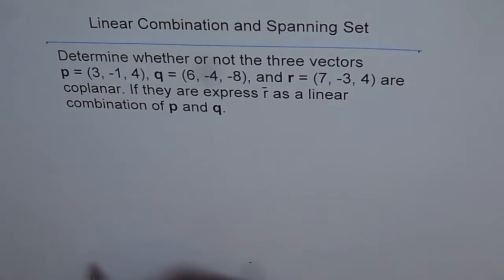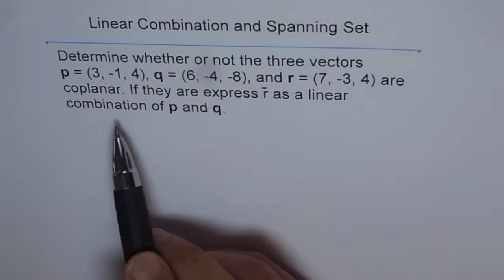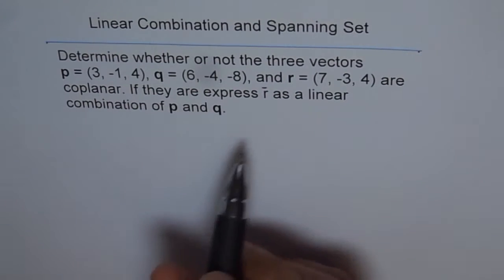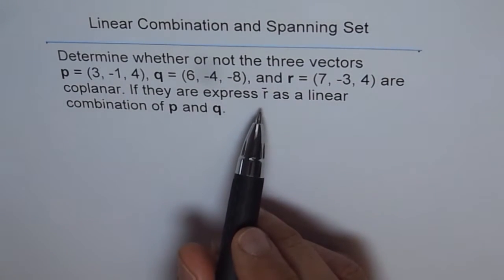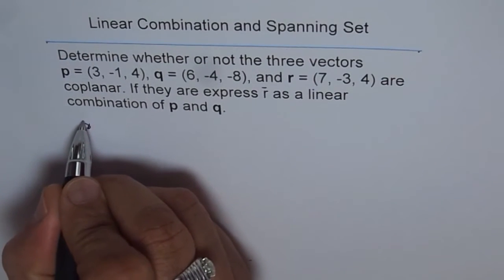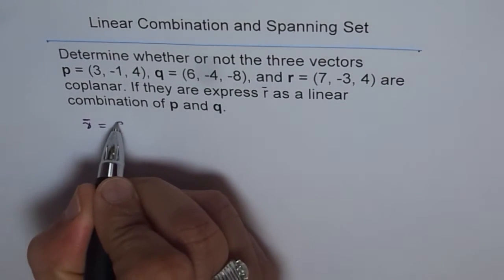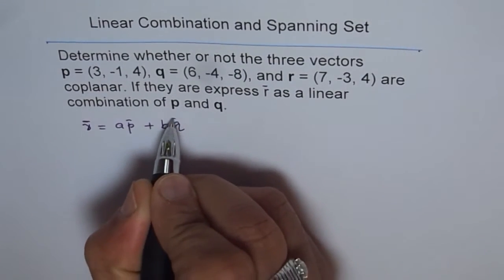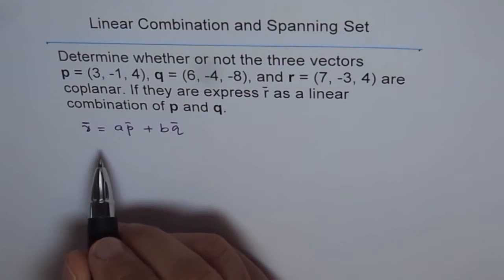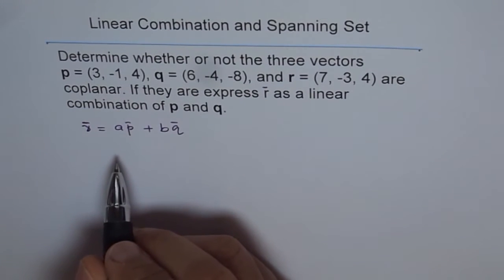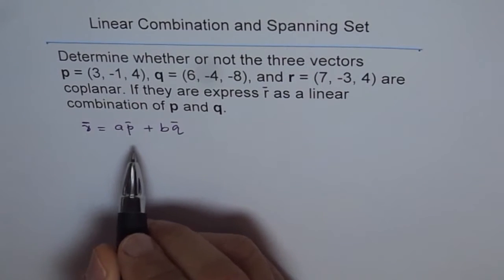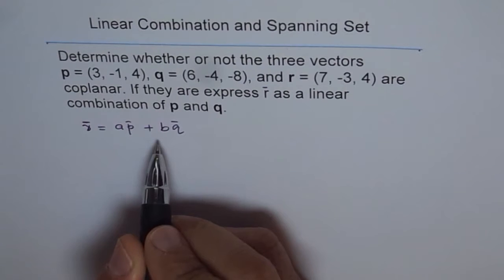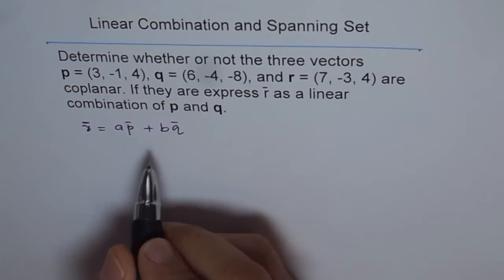If R can be expressed as a linear combination of P and Q, then they are coplanar. That is the strategy. We will try to express R as a linear combination of P and Q — that is to say, R equals A times P plus B times Q. If we can find values of A and B, then the vectors are coplanar; if we can't, then the vectors are not coplanar. Let's try to see whether it has a solution or not.